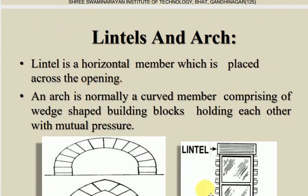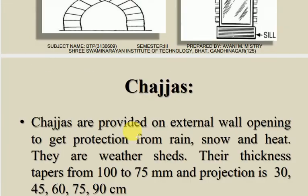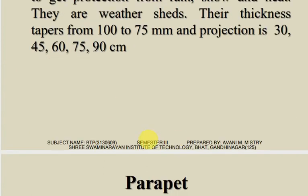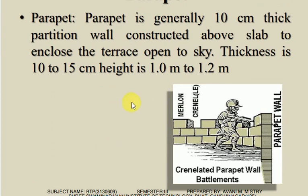Lintels and arches - the lintel is the horizontal member placed across the opening. Above the opening, a lintel is provided so that the brick masonry wall above does not collapse due to concentrated load over the opening. An arch is a curved member comprising wedge-shaped building blocks holding each other with mutual pressure. Chajjas are provided on the external wall opening to give protection from sun, rain, snow, and heat - they are weather shades. Their thickness is 75-100 mm and projection is 30, 45, 60, or 75-90 cm.